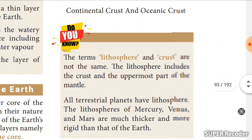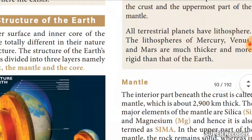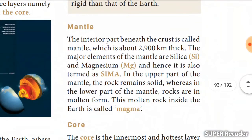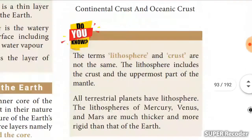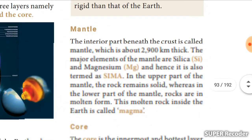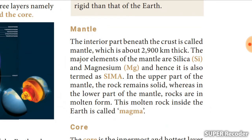The lithosphere and the crust are not the same. The lithosphere is the crust plus the uppermost part of the mantle. Other planets also have lithospheres — the lithosphere of Mercury, Venus, and Mars is much thicker than that of Earth. The crust consists of silica and aluminium (Sial), while the mantle consists of silica and magnesium — called 'Sima'.